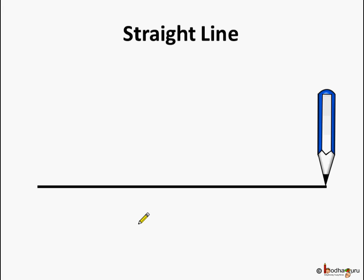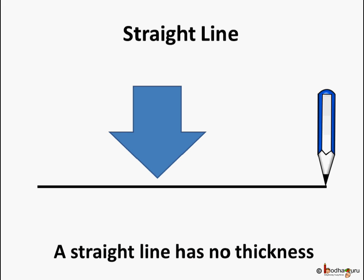You know we use a ruler to draw a line which has no curves. So it is a straight line. A line has no thickness and we can only measure the length of the line.